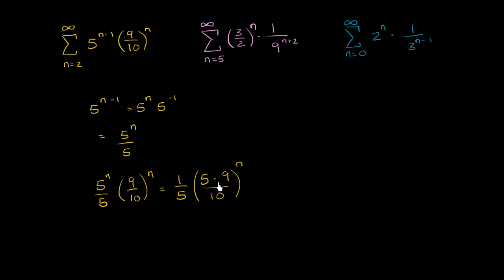And now the common ratio becomes a little bit more clear. This right over here would be our, it won't be our first term anymore because we're starting at n equals 2, but if we look at our common ratio, this right over here is going to be our common ratio. And is its absolute value greater than or less than 1? Well, 5 times 9 is 45 divided by 10, that's going to give you 4 and a half. So this is greater than 1. The absolute value is greater than 1, so this one is going to diverge. This sum is going to go to infinity.